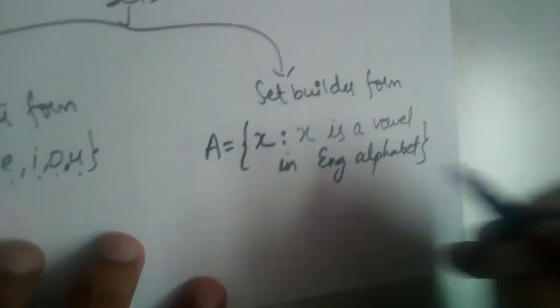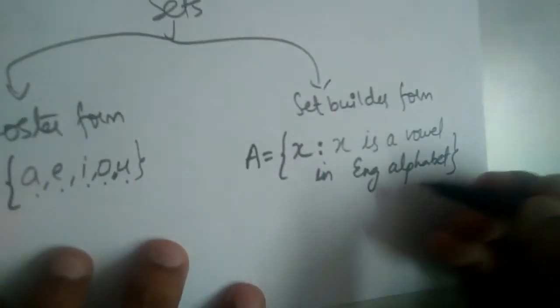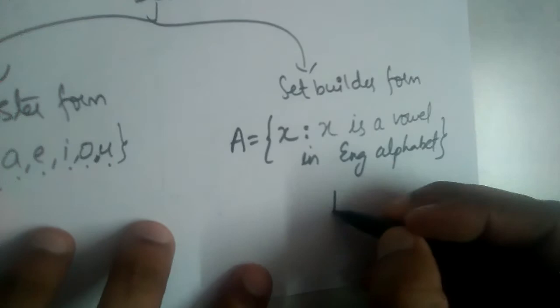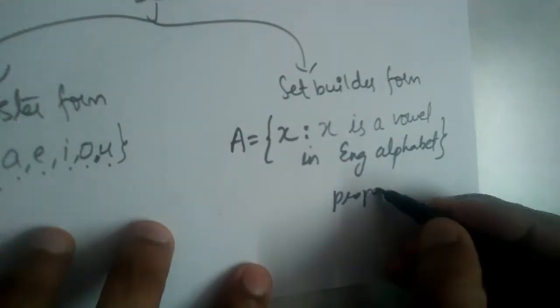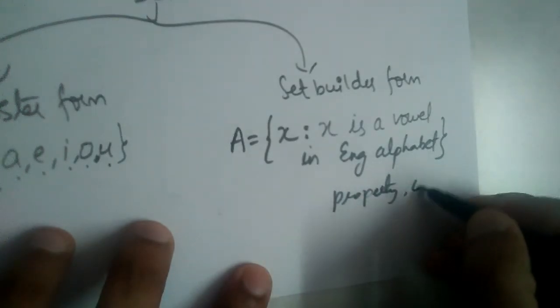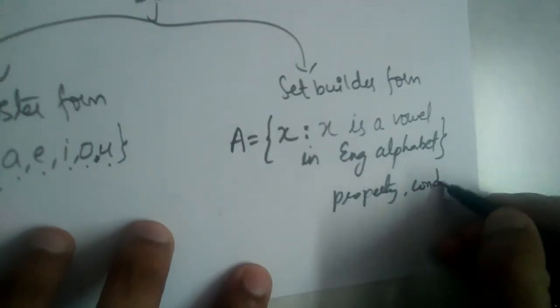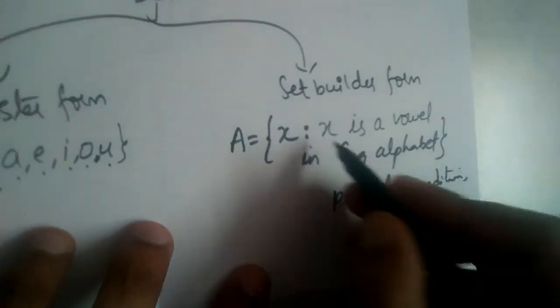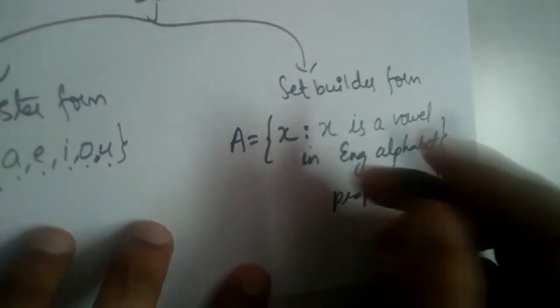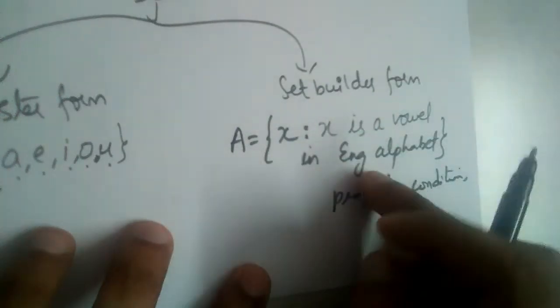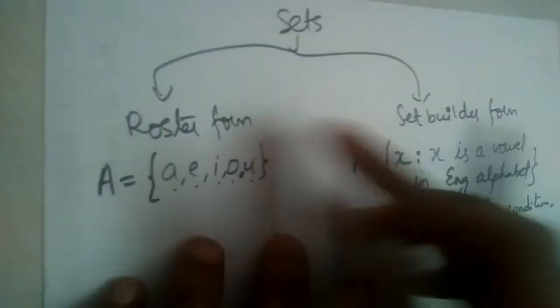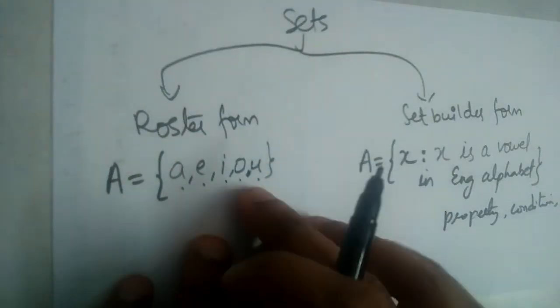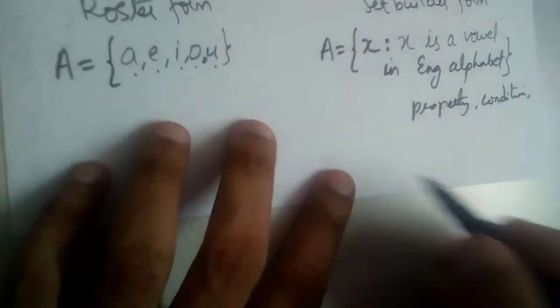In set builder form, we write the property — we don't write the actual elements. We write the condition or formula in a statement form. Whereas in roster form, we write the actual elements.